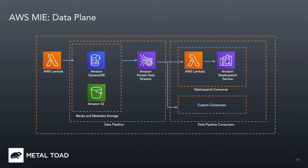Moving on to the data layer of the architecture: all results are stored in DynamoDB and any asset renditions are stored to an S3 bucket. The CloudFormation template comes with a great example of Kinesis data streams — in this case, it sends real-time updates to the Elasticsearch service, and it is this Elasticsearch instance that feeds the search and browse features of the Vue.js app.